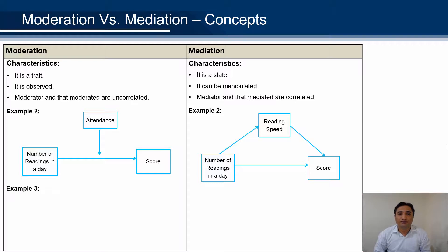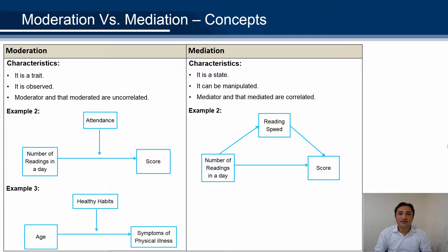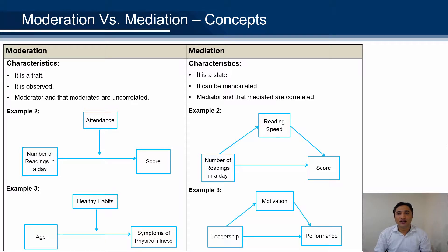Take another example: age can predict the symptoms of physical illness, and healthy habits act as a moderator. On the other hand, in mediation, leadership can predict performance and leadership can also predict motivation, and then motivation can also predict performance. Here, leadership generates both motivation and performance — the IV has a causal relationship with both the DV and the mediating variable. In moderation, the IV cannot have a causal relationship with the moderator.